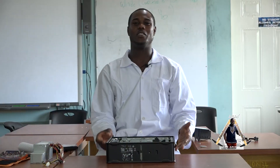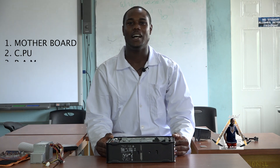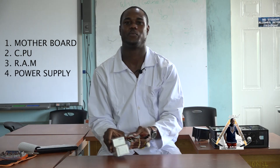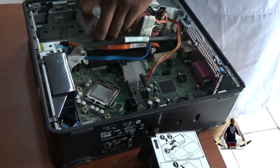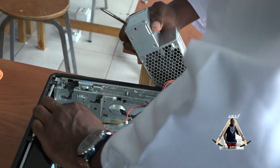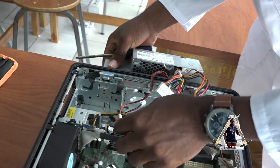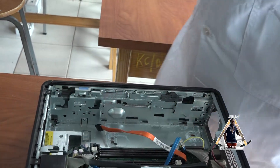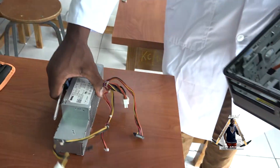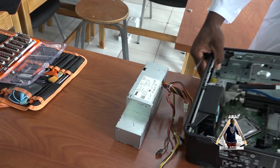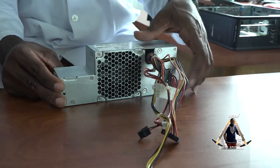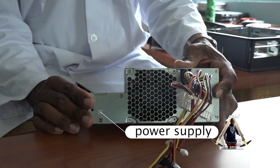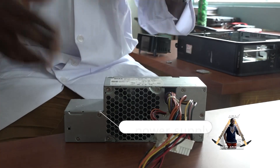We just spoke about the motherboard, the CPU, and the RAM. Now we're going to look at the power supply. It basically supplies power to the other components of the computer — hence why so many wires come from it. It is located at the top right of the computer tower and comes with a fan that keeps it cool. Once it is plugged in, the fan automatically comes on and starts to cool the system.